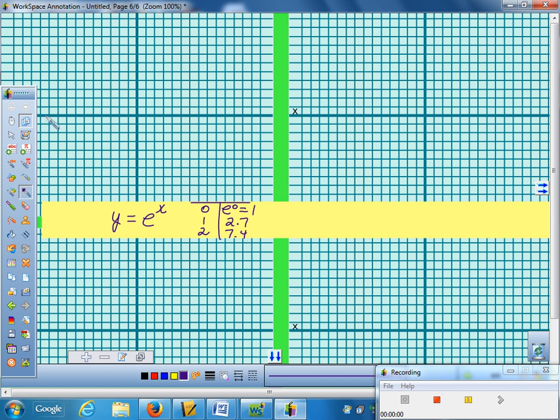All exponential functions have a horizontal asymptote at 0, and they all pass through the point (0, 1). In this case, then, we're going over 1, up 2.7, and then finally up 7.4. Exponential functions rise very quickly.